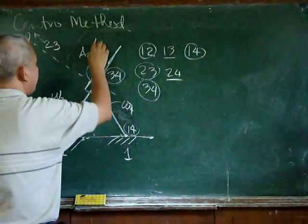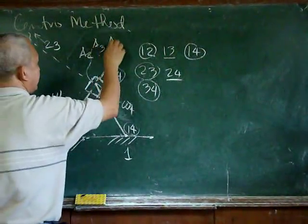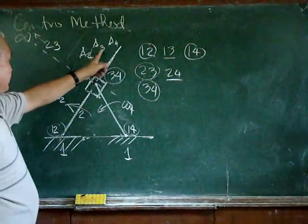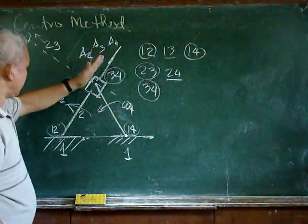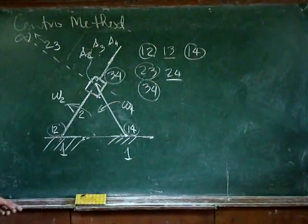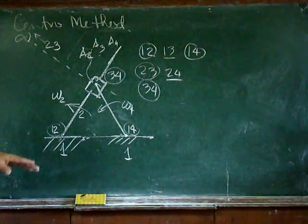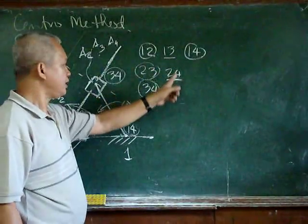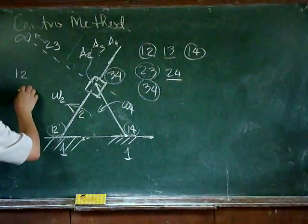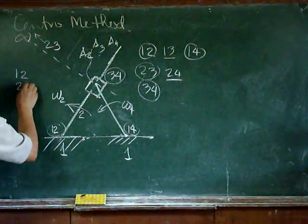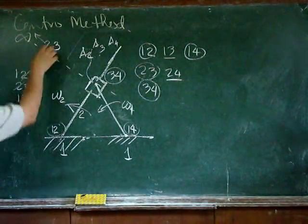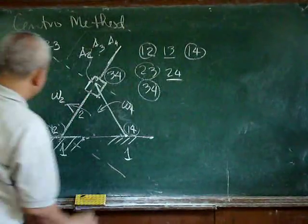There is also an A in body 3 and an A in body 4, and they are coincident points. However, A3 and A4 are sliding along this part in body 2. By Kennedy's theorem we can determine the location of instant centers 1-3 and 2-4. First, 1-2 and 2-3 can give us 1-3, so along this line we must be able to locate 1-3.